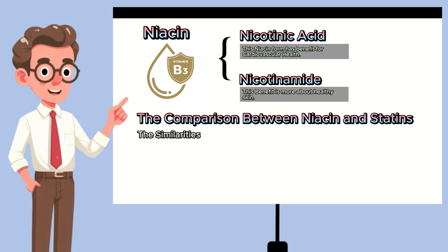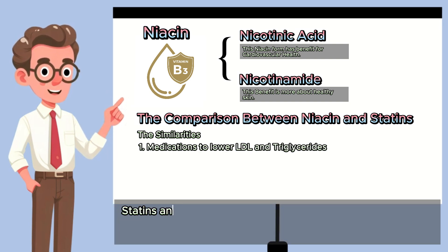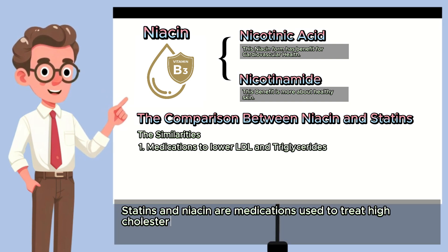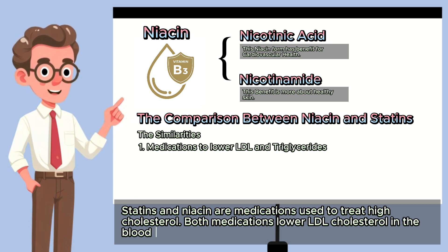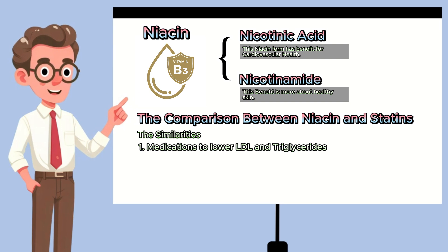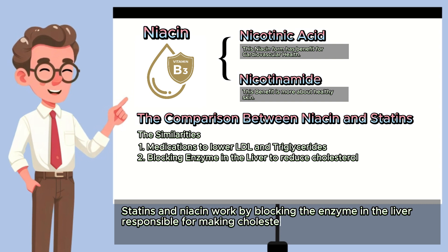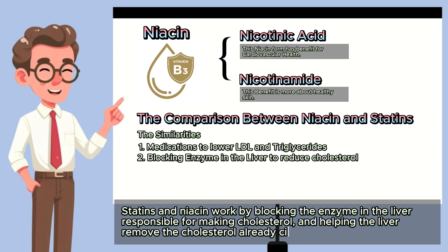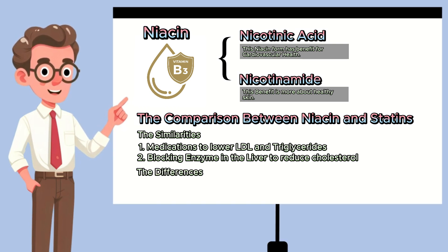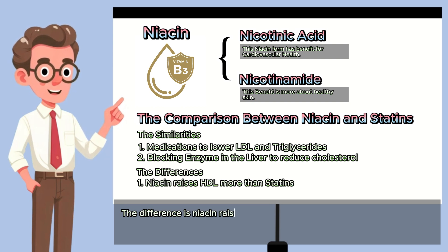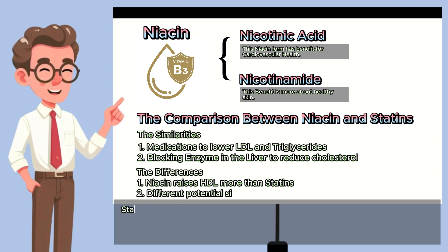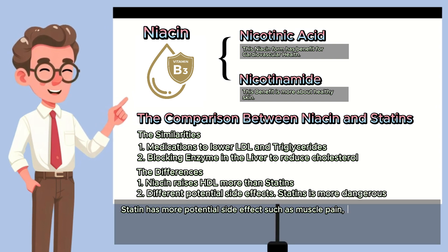Common or similar benefits: Number 1, statins and niacin are both medications used to treat high cholesterol. Both medications lower LDL cholesterol and triglycerides in the blood. Number 2, statins and niacin work by blocking the enzyme in the liver responsible for making cholesterol and helping the liver remove cholesterol already circulating in the blood. The difference between niacin and statins: Number 1, niacin raises HDL or good cholesterol more than statins. Number 2, statins have more potential side effects such as muscle pain, liver damage, and increased blood sugar levels in some individuals.